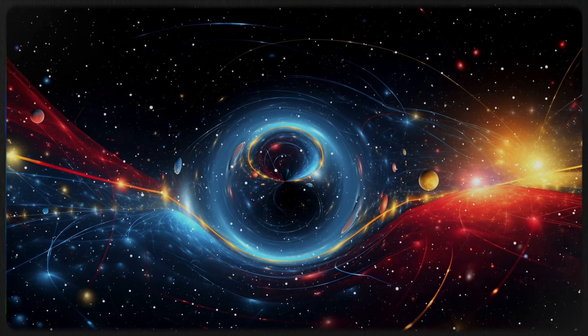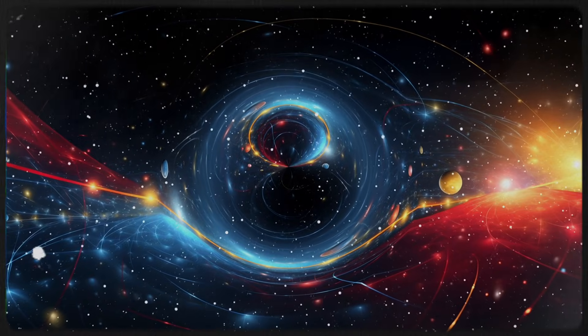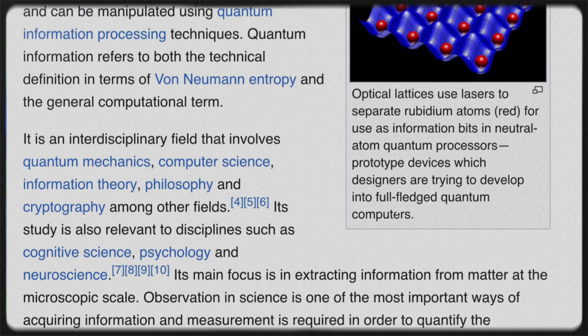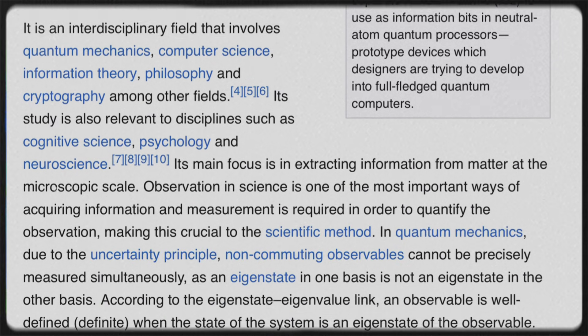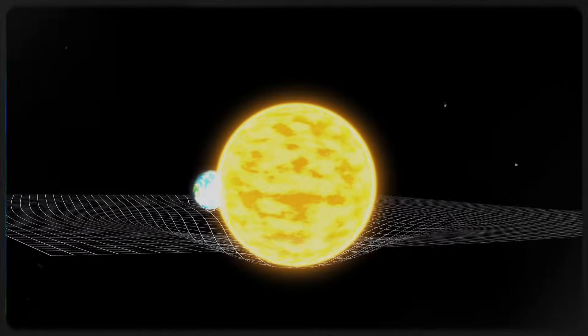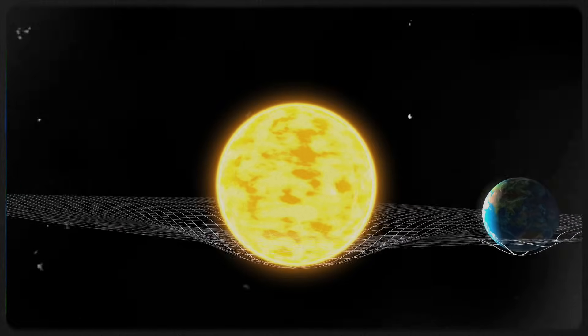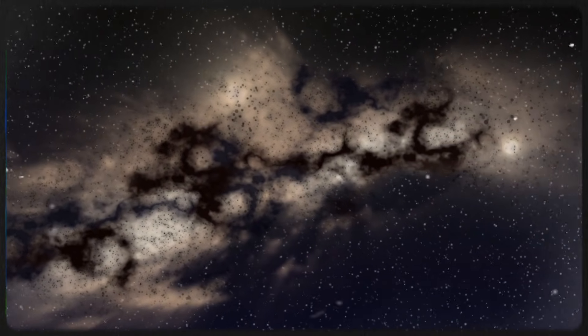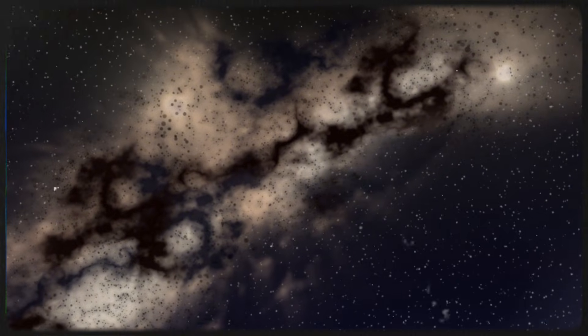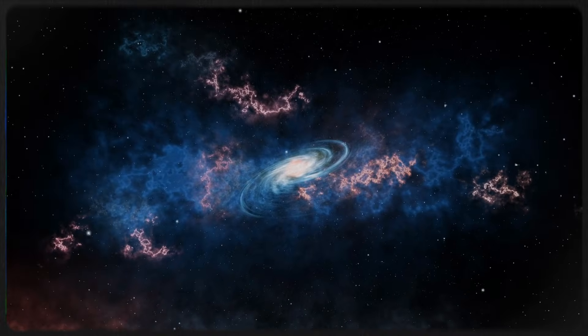Similarly, emergent gravity theories suggest that gravity could arise from quantum information principles, potentially eliminating the need for dark matter altogether. In these theories, gravity is not a fundamental force, but rather an emergent property that arises from the microscopic quantum behavior of space-time itself. If Lu's theory holds up, it would add another layer of complexity to these alternative gravity models, offering a completely new way to think about the source of gravitational forces. It might even lead to a more unified understanding of gravity, dark matter, and the larger structure of the universe. Whether or not his theory becomes widely accepted, it's clear that his work is sparking new conversations and pushing the boundaries of what we know about the cosmos.